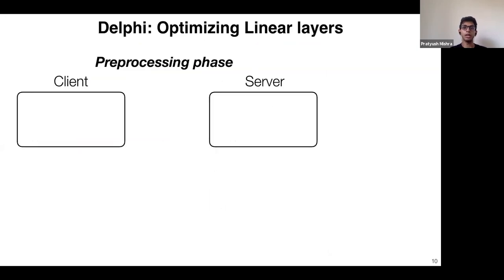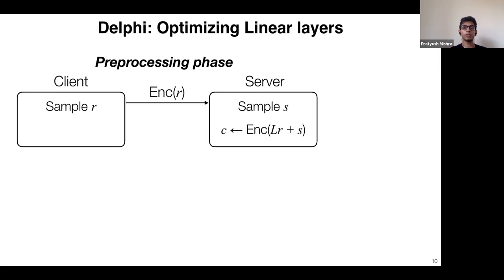To reduce these costs, we develop new cryptographic techniques in Delphi. The first is to optimize linear layer evaluation by moving heavy cryptography to an offline preprocessing phase before the client's input is available. The client samples a random r, encrypts it with LHE, sends it to the server; the server homomorphically applies the linear layer and sends back the masked ciphertext. The client decrypts to obtain Lr plus S — very similar to Gazelle but using random r instead of the actual input x.